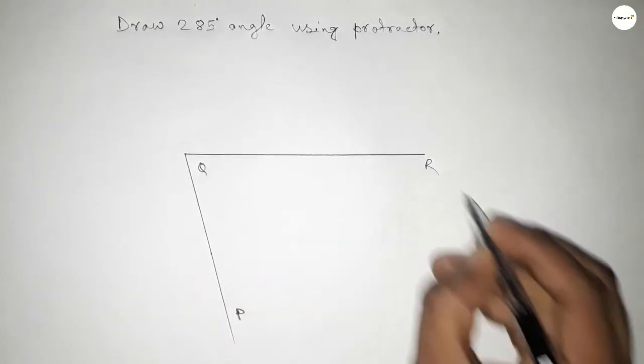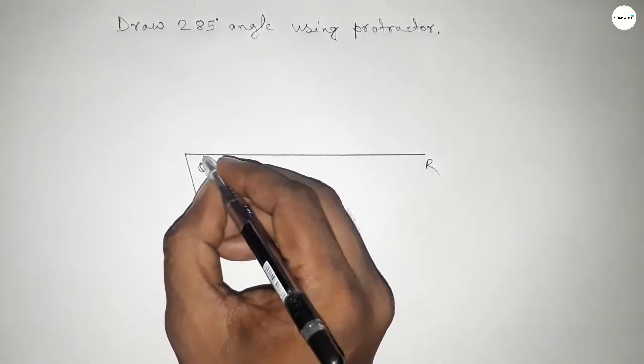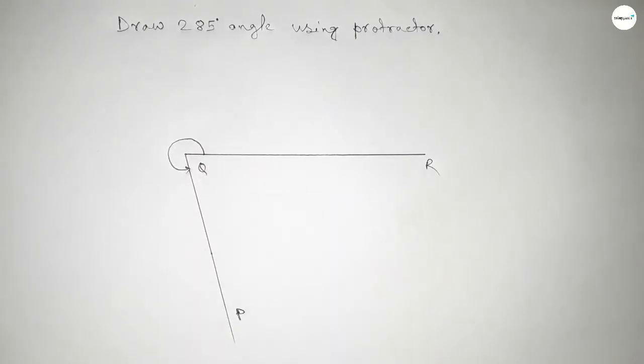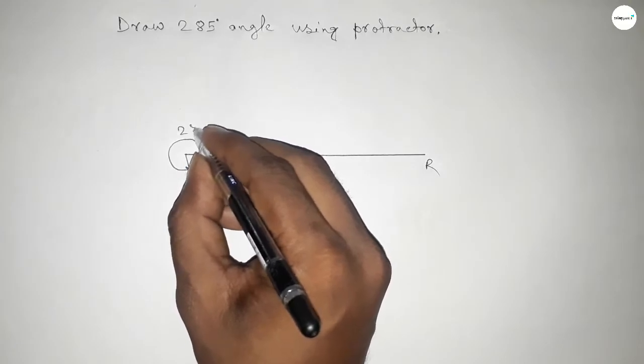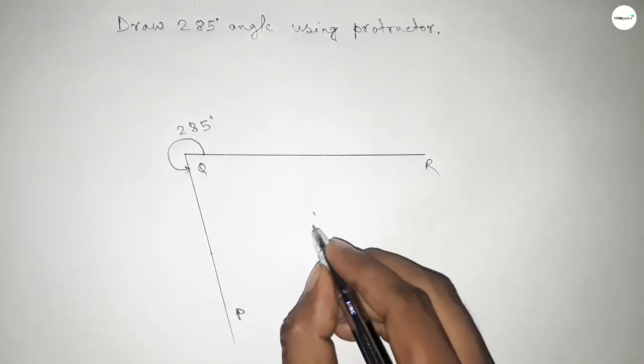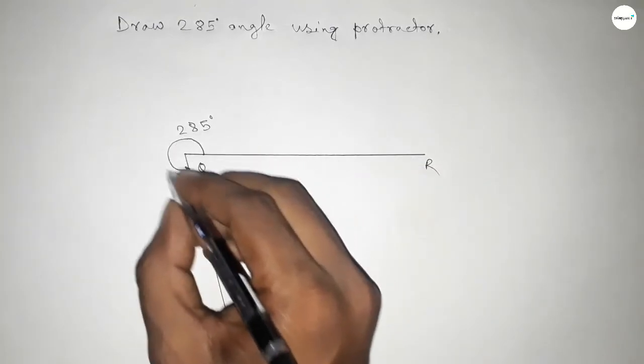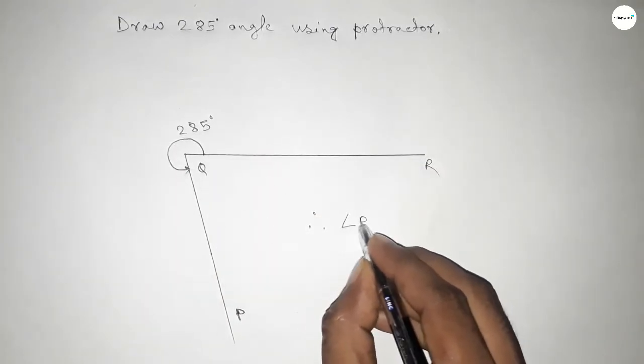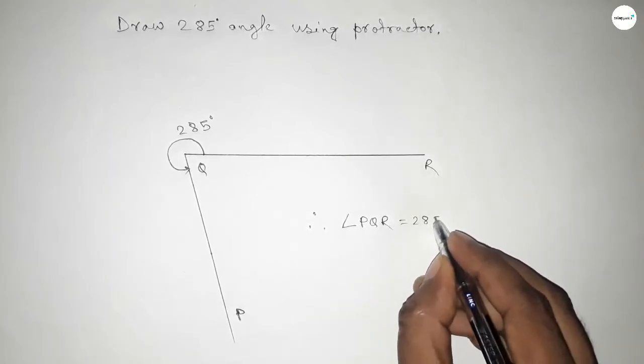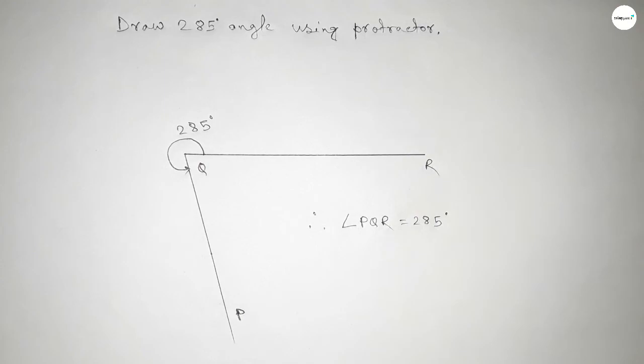This is angle PQR. So angle PQR equals 285 degrees. Therefore, angle PQR equals 285 degrees. That's all. Thanks for watching. If this video is helpful to you, then please share it with your friends.